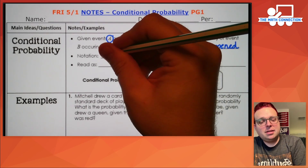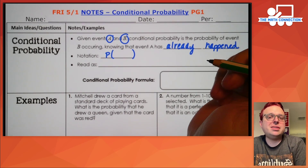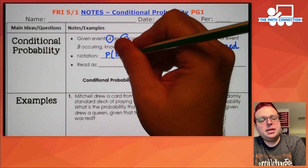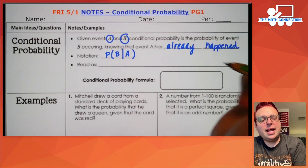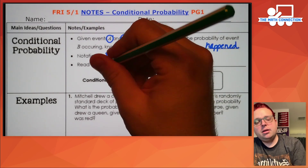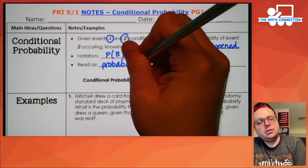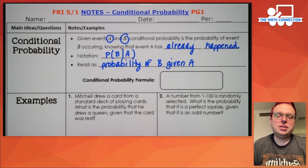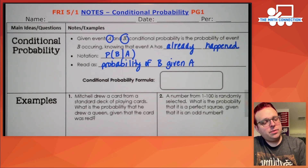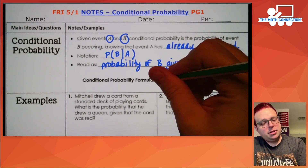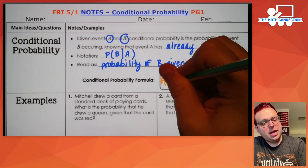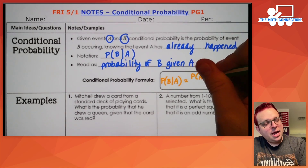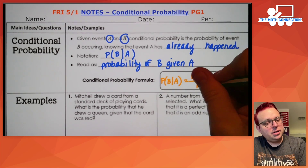The probability — remember in the last lesson we used P and some parentheses to represent probability. What we're calculating here is the probability that event B will occur given the condition that A has already happened: probability of B given A. The formula is P(B|A) equals the probability of A and B divided by the probability of A. On the numerator we're taking the joint compound probability that these two things are happening, then divide by just the probability that the first thing is happening.